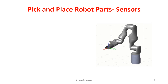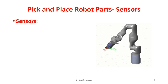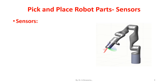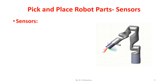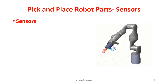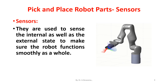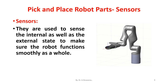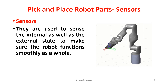Sensors. They are used to sense the internal as well as the external state to make sure the robot functions smoothly as a whole. Sensors involve touch sensors, IR sensors, etc.